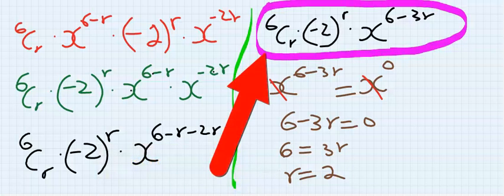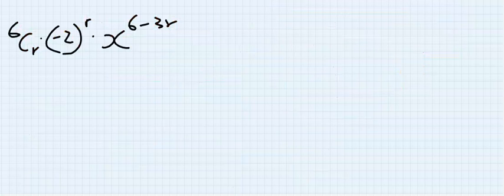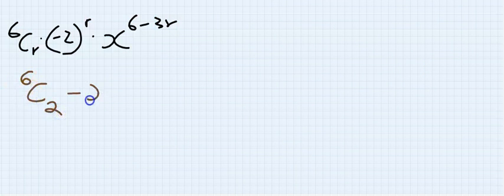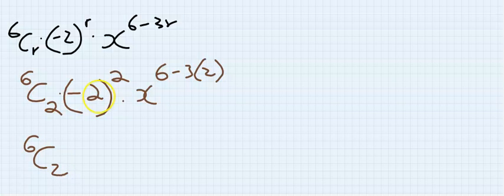I will now substitute: 6 combination 2, minus 2 to the power of 2, x to the power of 6 minus 3 times 2. 6 combination 2 gives you 15. (-2)^2 equals 4.